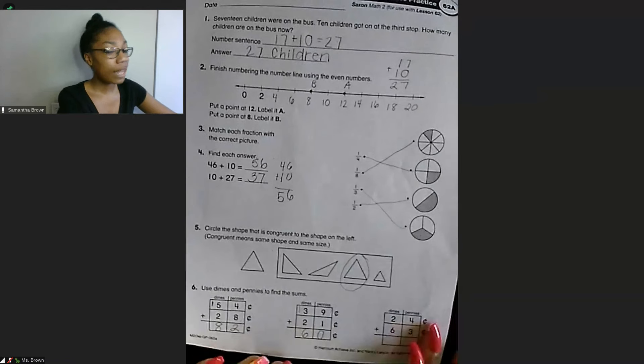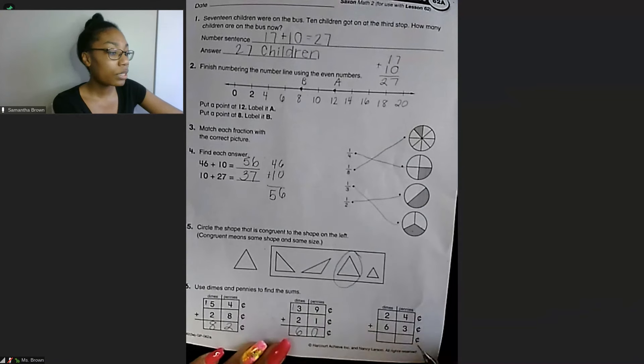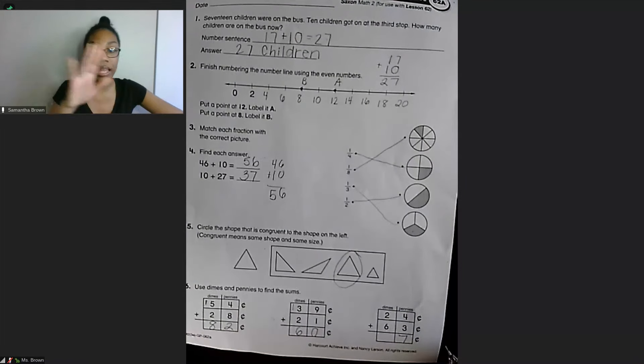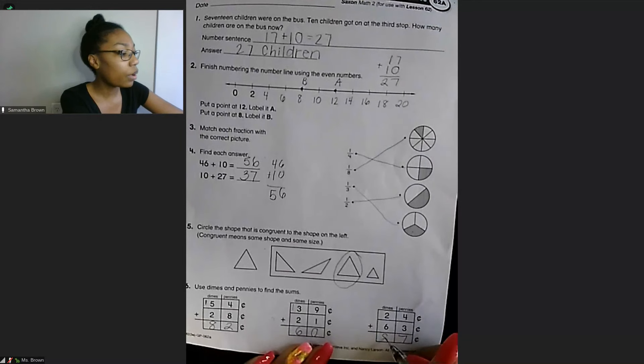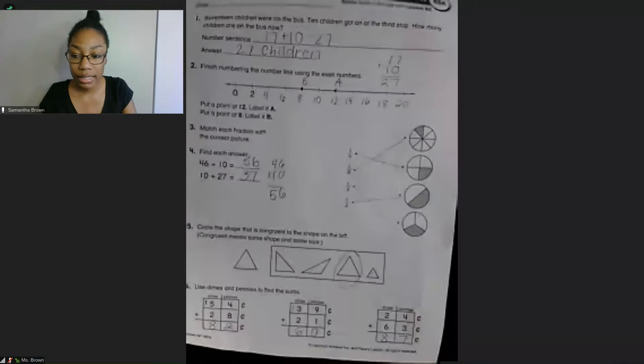And then our last one we have is 24 cents plus 63 cents. We have 4 plus 3 equals 7. Since that is a single digit, we do not need to bring anything over to the next column. And we have 2 plus 6 equals 8. So 87 cents. All right. As always, let me know if you have questions. That is the end for Tuesday. Bye.